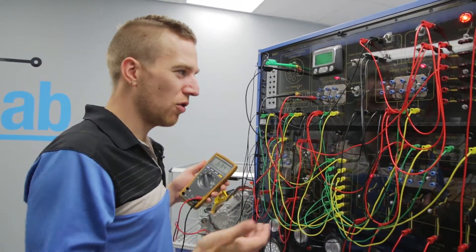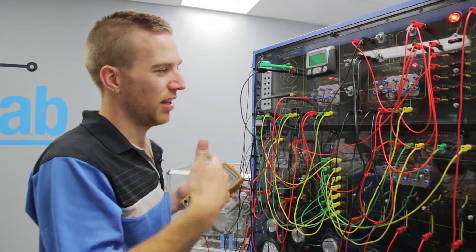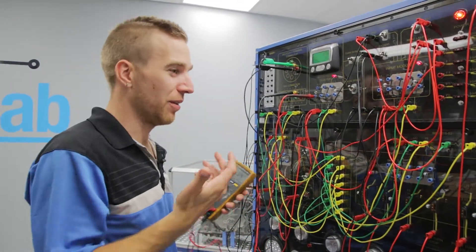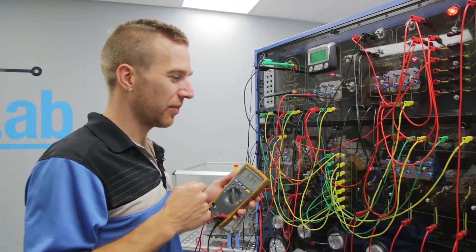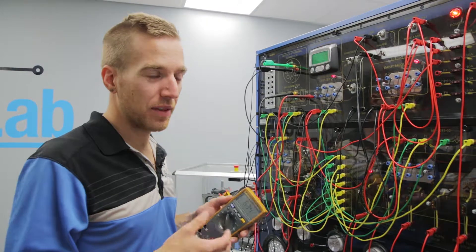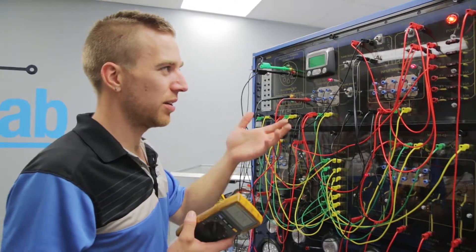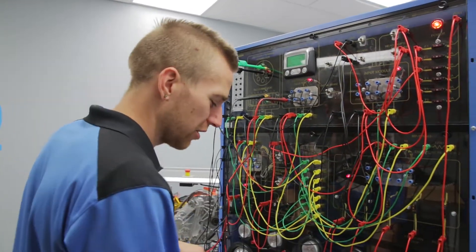So if there's an open circuit the module will know, if we have a short to ground the module will know, if we have a short to power the module will know. Any error state of that circuit will be known. But it also simplifies the wiring, we don't need to have individual wires for each one of those functions.